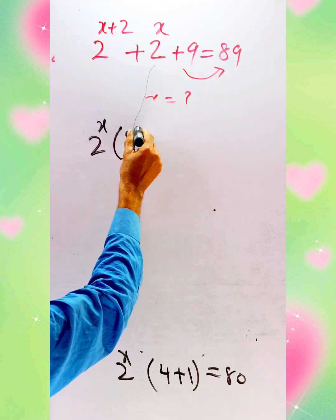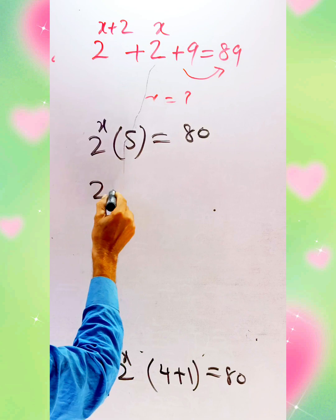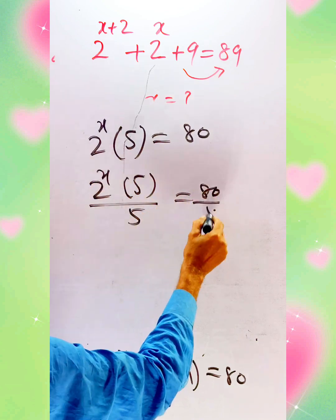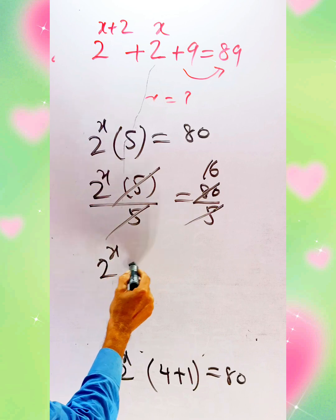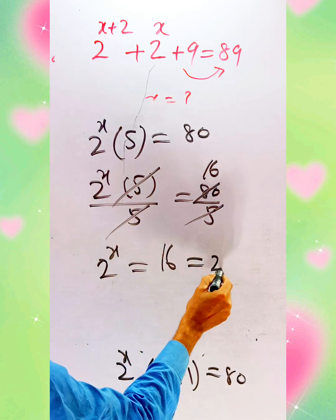Dividing both sides by 5, we get 2^x = 16. We can write 16 as 2^4.